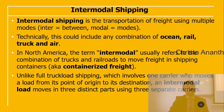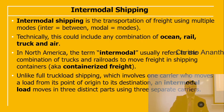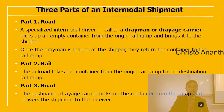Intermodal shipping is the transportation of freight using different modes — ocean transport, rail, truck, and even air. In North America, intermodal is defined as a combination of trucks and railroads to move freight in shipping containers. Unlike full truckload (FTL) shipping, which involves one carrier moving a load from origin to destination, an intermodal load has three parts with three separate carriers: road, rail, and road.